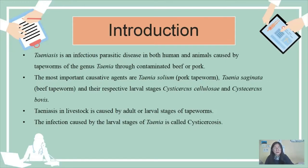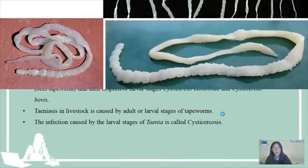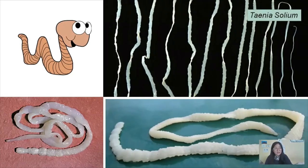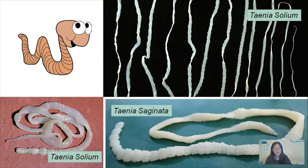So we'll be mainly focusing on the two types of Tenia which are Tenia solium and Tenia saginata. These are the images of the Tenia species: this is Tenia solium, another Tenia solium, and Tenia saginata.